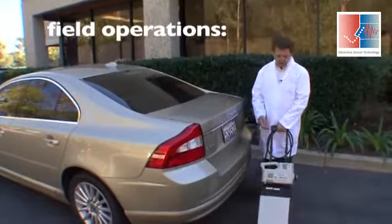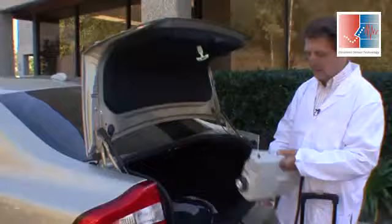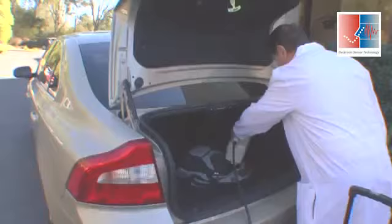And this is the model 4600 portable Zenos on wheels, easy to move around. What we do is take the instrument up, open up the trunk and then press the start button right here to take a sample.